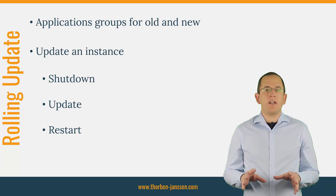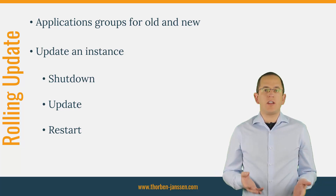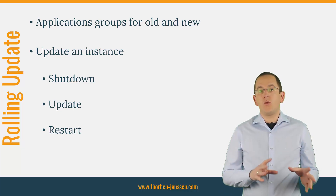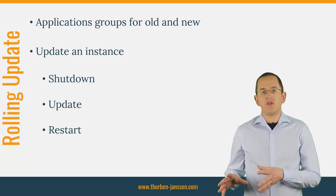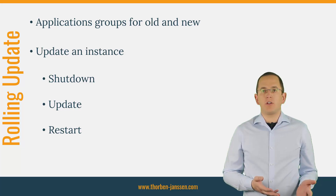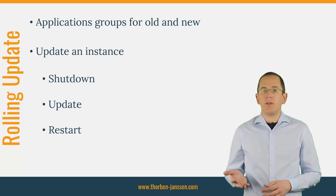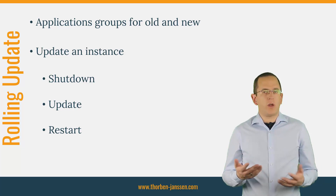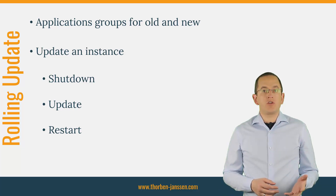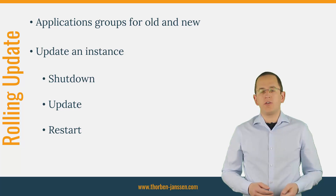The rolling update adds a few requirements to your database migration. You no longer need to just adapt the database in the way it's required by your application. You also need to do it in a way that the old and the new version of your application can work with the database. That means that all migrations need to be backward compatible as long as you are running at least one instance of the old version of your application. But not all operations — for example renaming or removing a column — are backward compatible. These operations require a multi-step process that enables you to perform the migration without breaking your system.